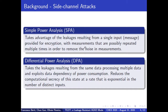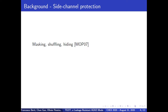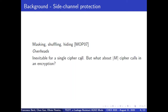DPA reduces the computational secrecy at a rate that is exponential in the number of distinct inputs. The data requirement of SPA is much weaker, but it is also very difficult to launch. To resist DPA, one should apply side-channel protection techniques like masking, shuffling, and hiding, but these are of course not free. For example, software masking blows up the cycle cost by a factor of more than two. The pay is inevitable for a single cipher call, but what about many calls in an encryption?